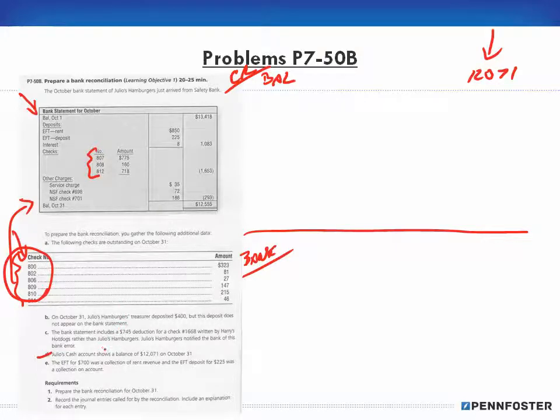I have an $850 rent deposit and a $225 deposit and an $8 interest. It says here the EFT for $700 was a collection of rent revenue, and the EFT deposit for $225 was a collection on account. I believe that this $700 is an error. It should have been $850, so just be aware that that is an error in the textbook.